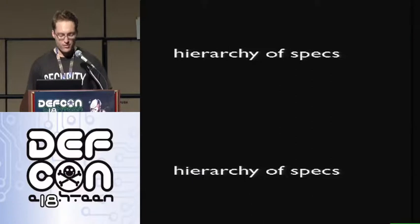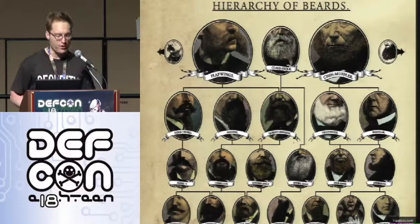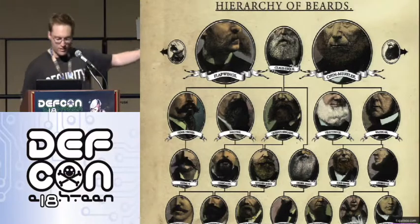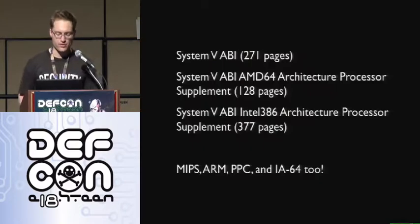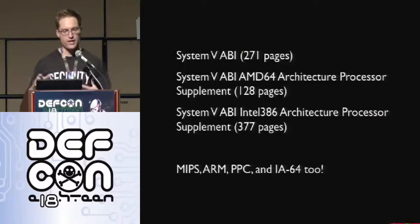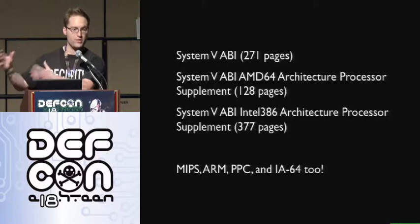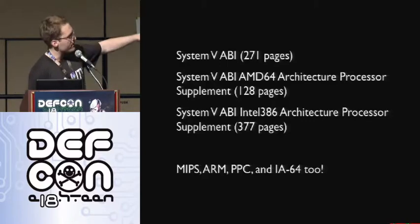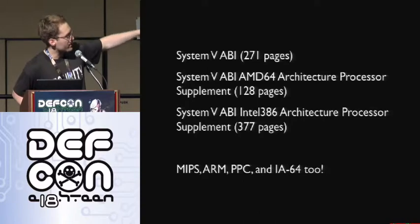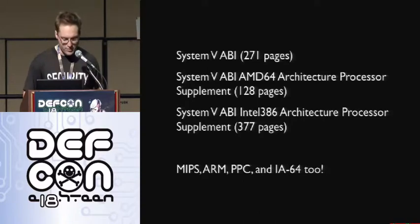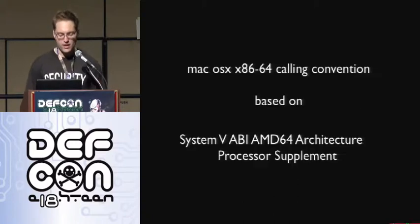The great thing about the ABIs is that they form a hierarchy, kind of like a hierarchy of beards. The ABIs are the exact same way — you have the big System V ABI which is like 200 pages. It has sections where it says, hey, at this point, open up your architecture-specific ABI and read that one. The AMD64 ABI has a page where it says everything in here is true, but you also need to read everything in the i386 ABI. So if you actually want to understand what's going on, you need to read like 700 pages. There are also ABIs for MIPS, ARM, PPC, and Itanium as well.